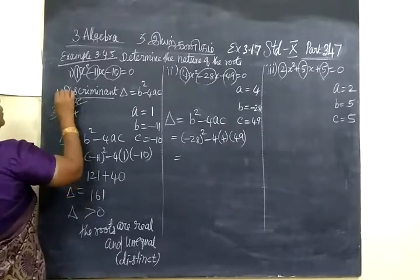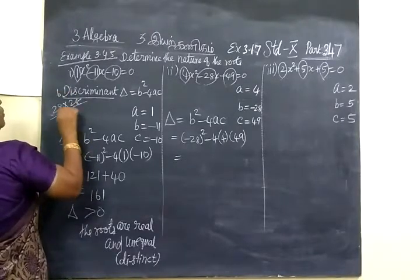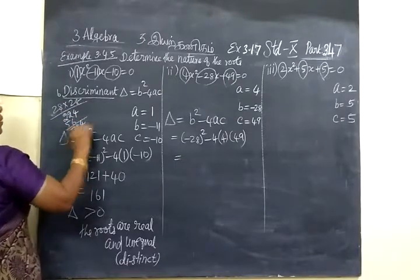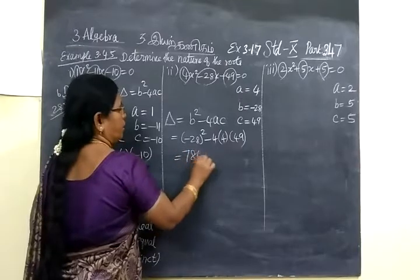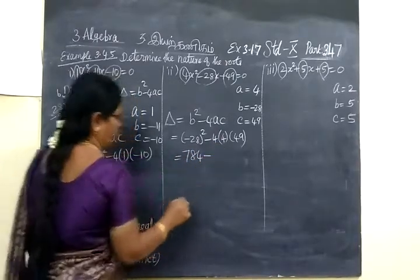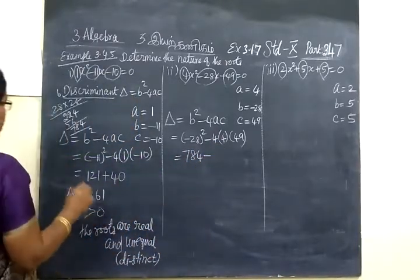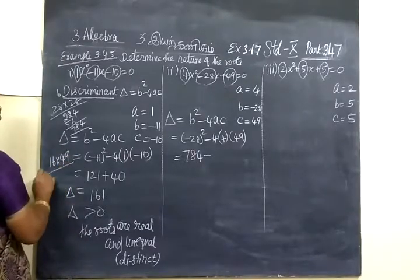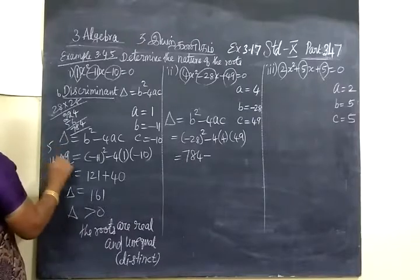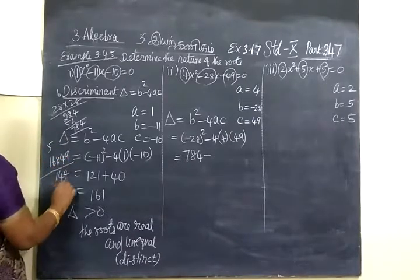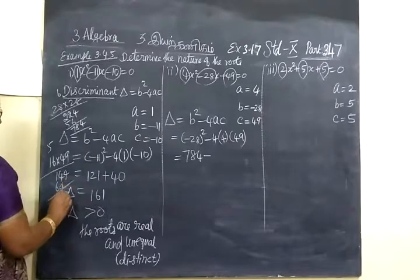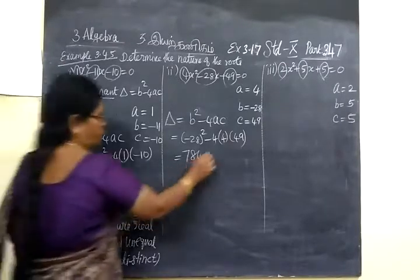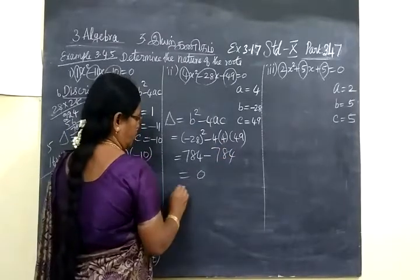The balance is 22, then 56. So 784 minus here 4 fours are 16, 16 into 49. Balance by 1, 144, then 64. So 784 equal to 0.